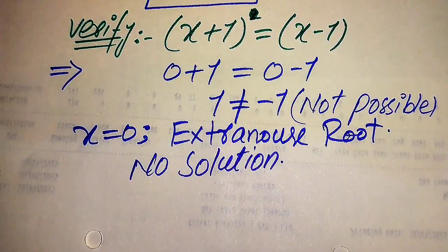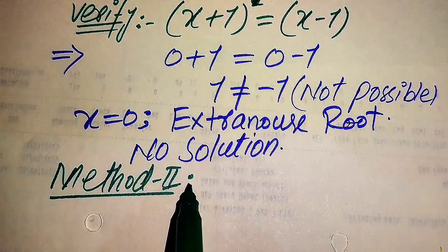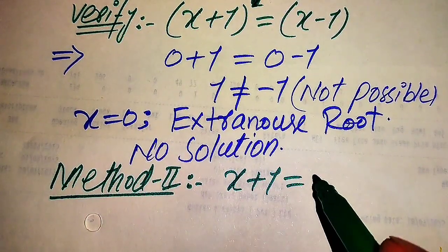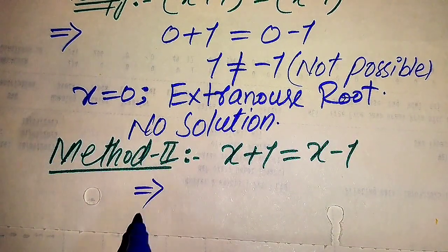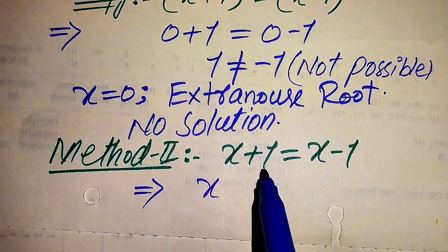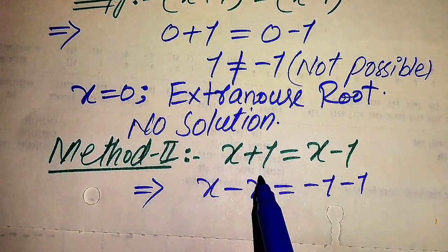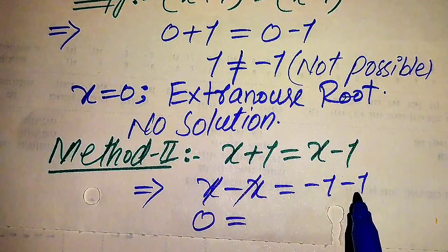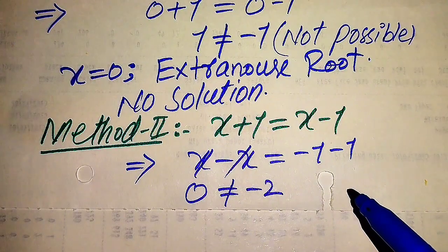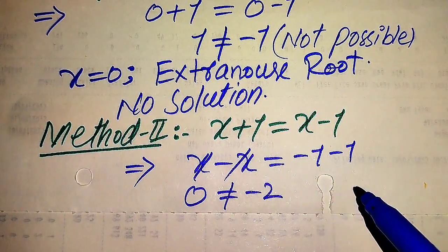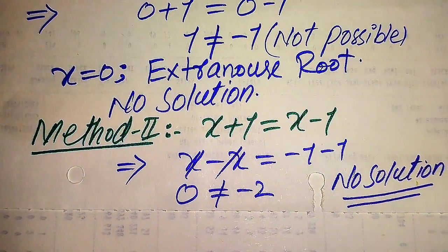Now we solve this problem using the second method, which is a quicker approach. Starting from x+1 = x−1, we move +x to the left-hand side and +1 to the right-hand side, giving x − x = −1 − 1. The x terms cancel, leaving 0 = −2. Since both sides are not equal, we cannot get any value of x that satisfies the equation, so the final conclusion is that this question has no solution.